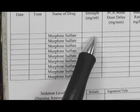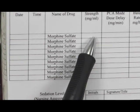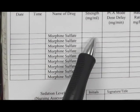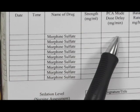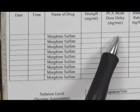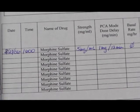The next column asks the strength. This drug is supplied as 5 milligrams per milliliter, so that's what you'd write in this column. The next column asks the PCA mode and wants to know the dose delay. The physician, in this case, has ordered one milligram with a lockout of every 12 minutes, so that's what we would write in this column.